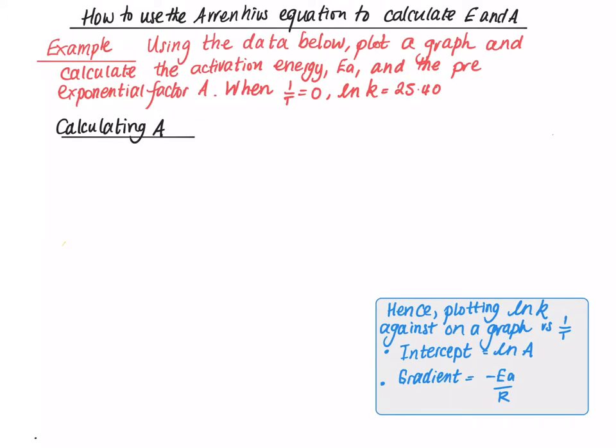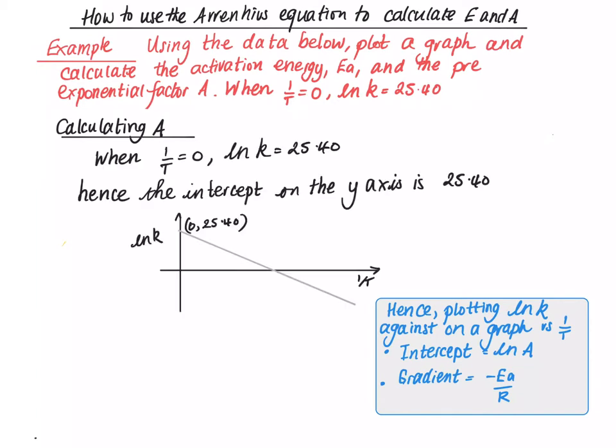The question also asks us to calculate the pre-exponential factor. So from our earlier working, we know the intercept is ln A. So ln A is where the line crosses the Y axis here, and we're told in the question that when 1 over T equals 0, ln K equals 25.4.